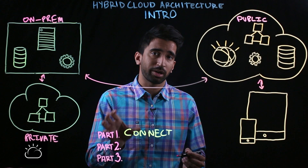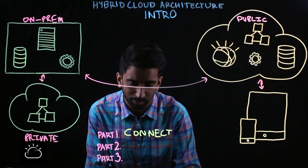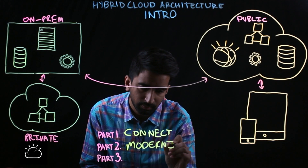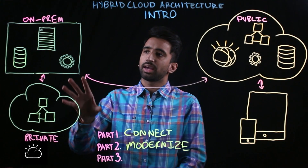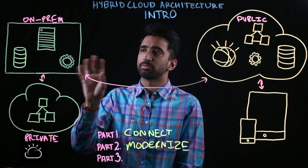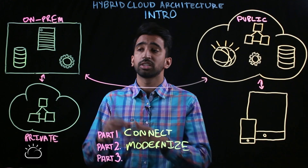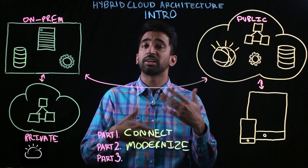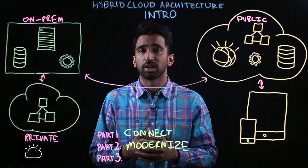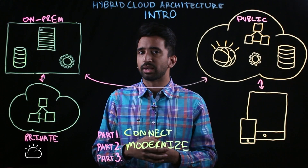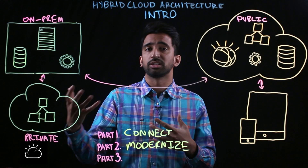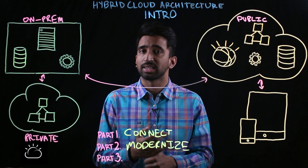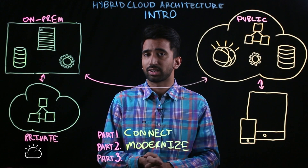In part two, we want to talk about modernization. You can imagine that with existing applications that you may have, you may have a monolithic application that you want to break apart and move to a public cloud. That might allow you to take better advantage of scaling that public environments offer. That's a very simple use case, and one of many, when it comes to modernizing your applications. In part two, I'm going to hit on strategies to modernize those legacy applications, which is a core part of hybrid cloud architectures.